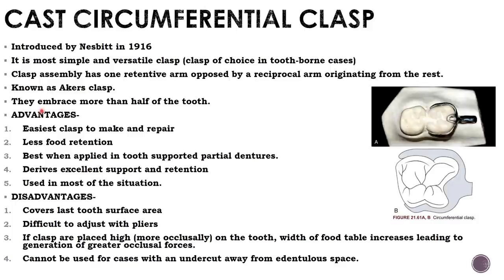Circumferential clasps embrace more than half the tooth and all components are made of cast alloys. The retentive terminal should originate above the height of contour and terminate below it, pointing towards the occlusal surface — never towards the gingival. The retentive tip should only terminate in mesial or distal line angles.